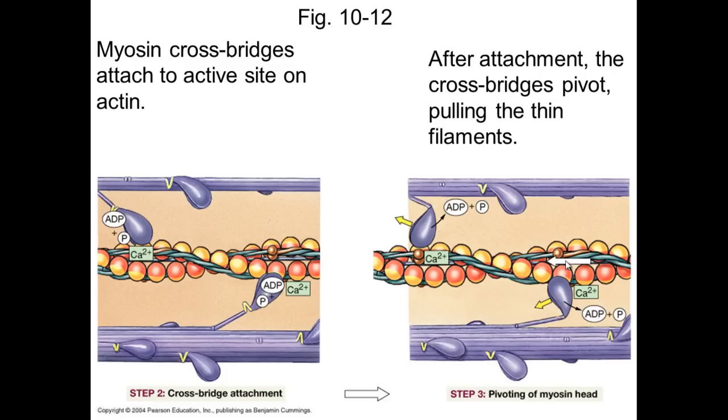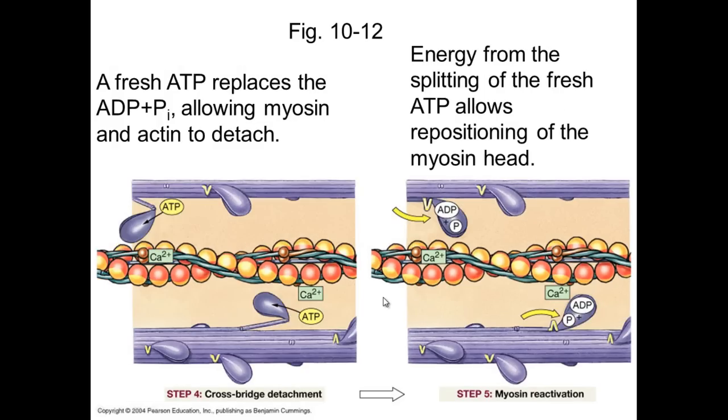Now what has got to happen here is in order for this to continue, this movement to continue towards the sarcomere, you want this myosin head to detach and so essentially that is the next thing that happens. The chemical ATP is then cleaved onto or attached to the myosin head and is then broken down by a specific enzyme called ATPase.